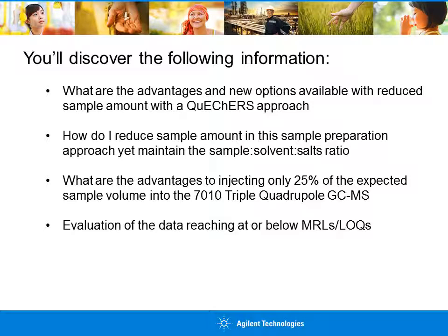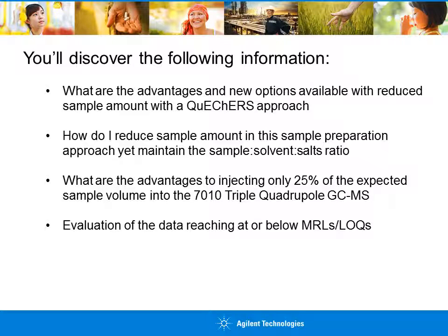You will discover the following: what are the advantages and new options available with reduced sample amount using the QuEChERS approach? How do I maintain the same sample-solvent-salt ratio used in the QuEChERS approach? What are the advantages to injecting only 25% of the expected sample volume into the 7010 triple quadrupole GC-MS/MS? And an evaluation of the data reaching at or below MRLs.